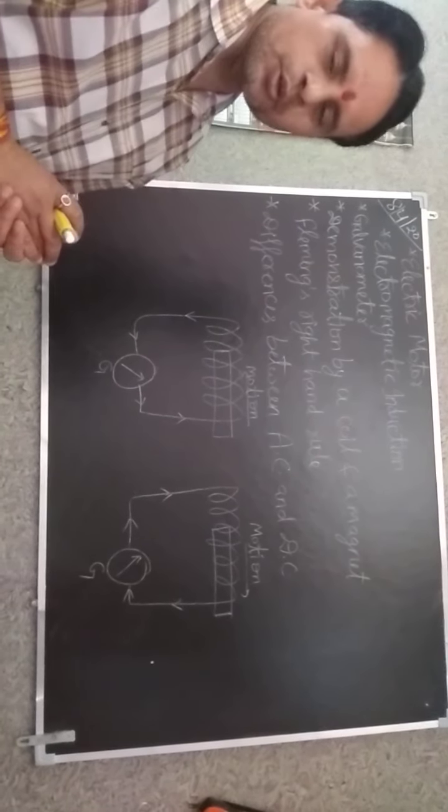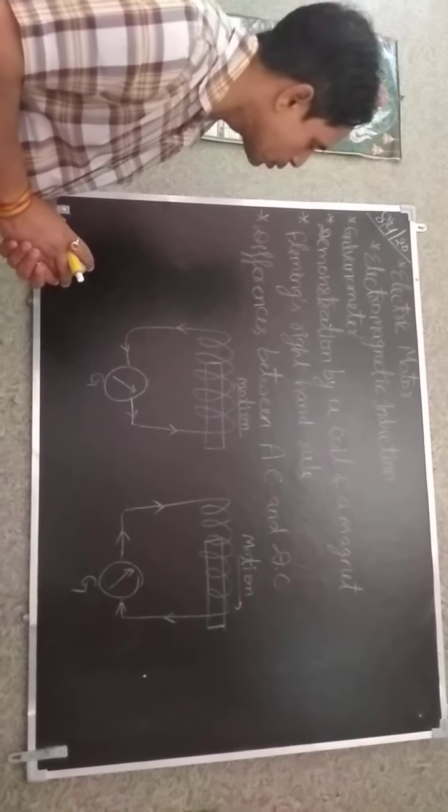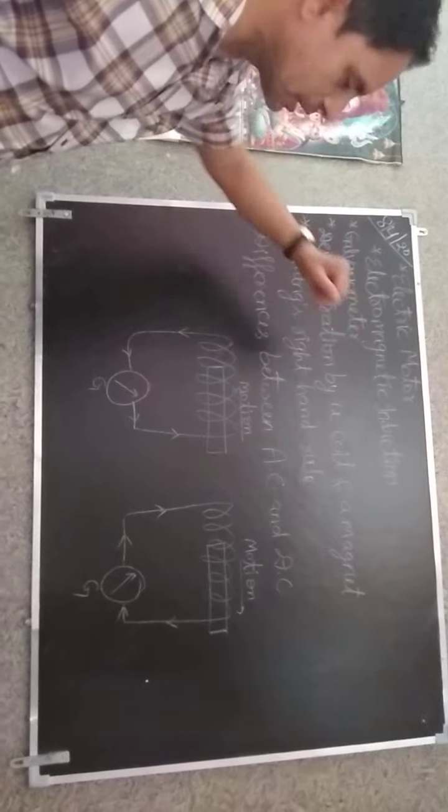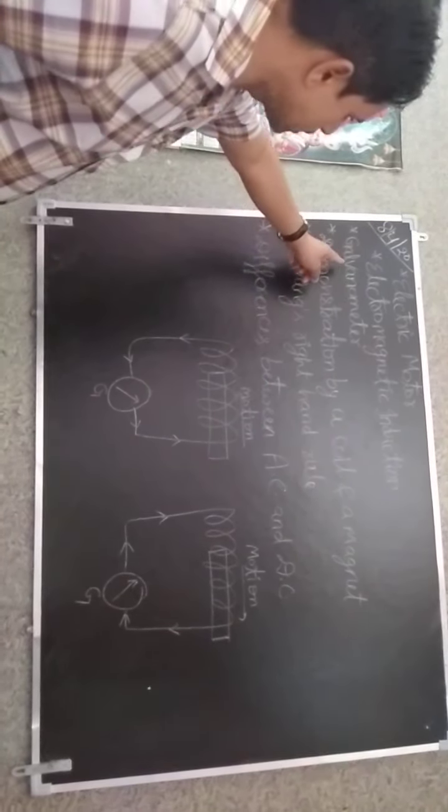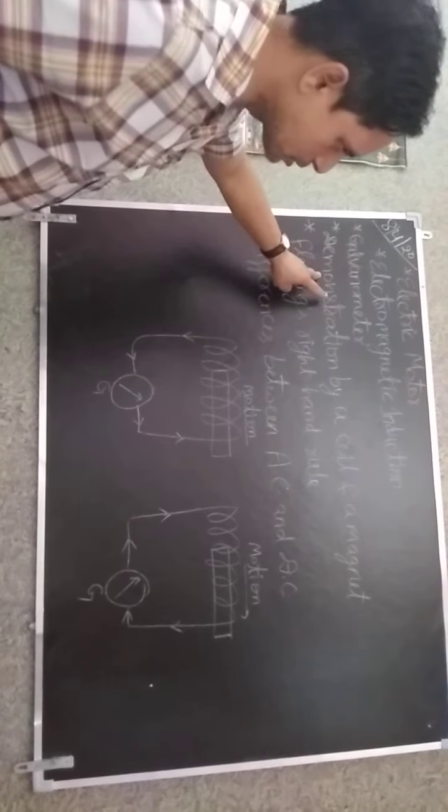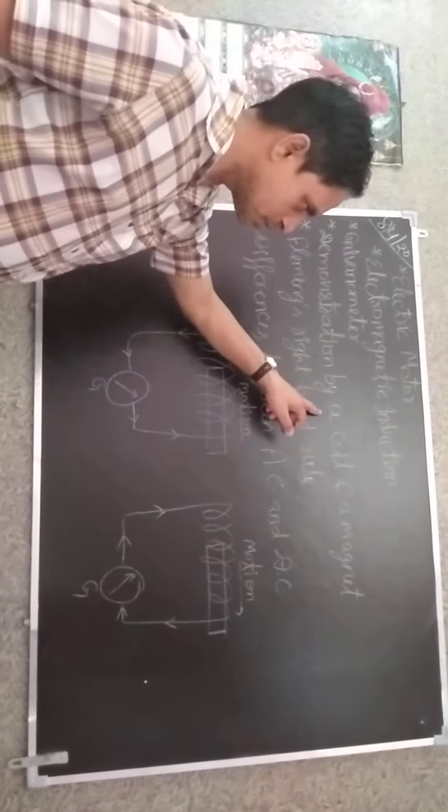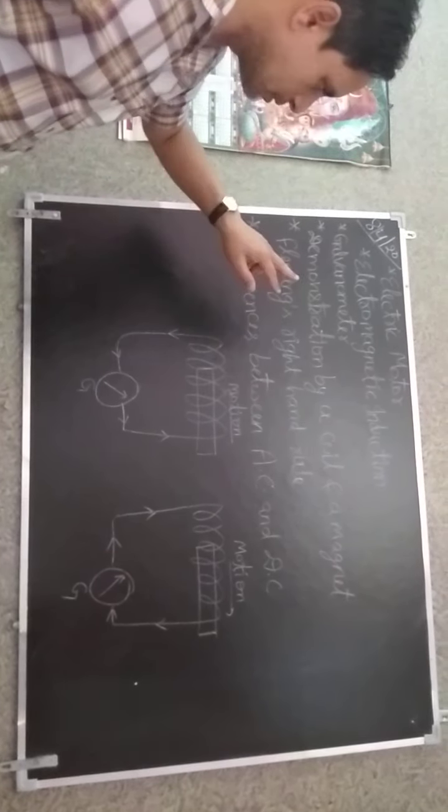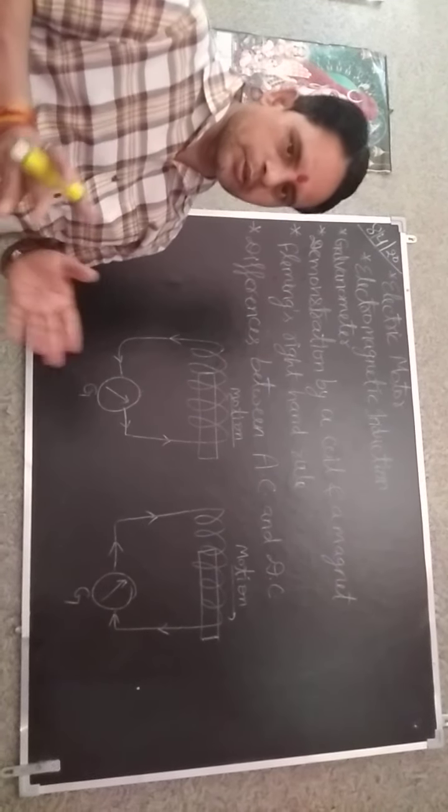In the previous videos we discussed up to Fleming's left hand rule, and today we are going to learn these topics: electric motor, electromagnetic induction, galvanometer, demonstration of electromagnetic induction by using a coil and a magnet, then Fleming's right hand rule and differences between AC and DC. So let's start.